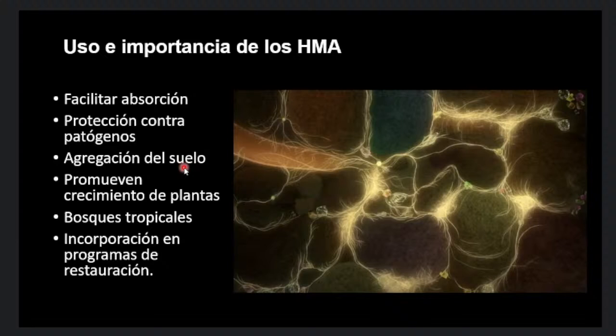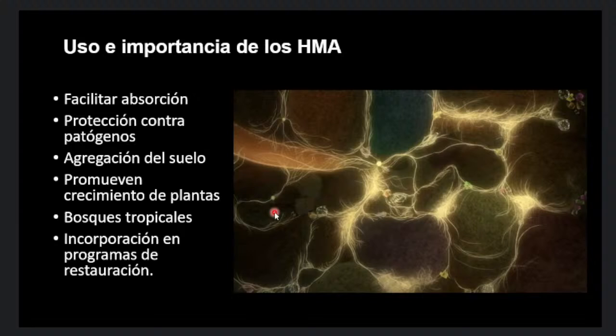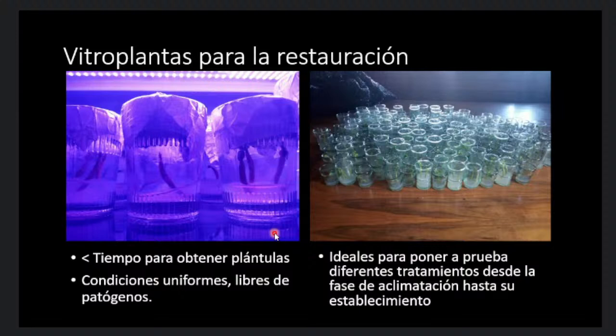Las micorrisas mantienen la agregación del suelo. Como podemos ver, se adhieren a micropartículas y posteriormente se forman macropartículas, y de esta manera el suelo queda protegido de la erosión. En los bosques tropicales se ha visto que naturalmente muchas especies están asociadas a micorrisas; por ejemplo, en un estudio en Ecuador se ha visto que aproximadamente el 98% de especies en los bosques tropicales estaban asociadas a micorrisas, por lo que es muy importante su incorporación en programas de restauración.